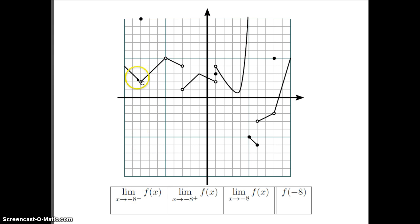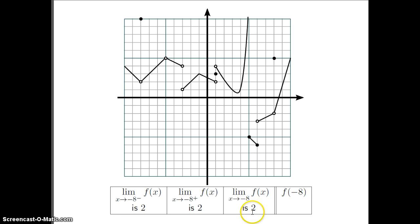The limit on the left — you just look a little bit to the left and see that the y value would be 2. On the right, starting a little bit to the right of negative 8 and moving in towards negative 8, the y value also appears to be 2. Since these two numbers match, the two-sided limit is 2. And finally, the value of the function itself — we look along here, and it is right up here: it's 10.